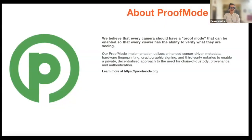The app comes from the idea that every camera should have a proof mode feature that could enable users to verify what they're seeing. The implementation of the app uses enhanced sensor-driven metadata, hardware fingerprinting, and cryptographic signing, that is going to allow users to share these signatures with third parties to notarize it and verify that the media you are seeing hasn't been tampered with. You can find more information about it on our website, which is proofmode.org.